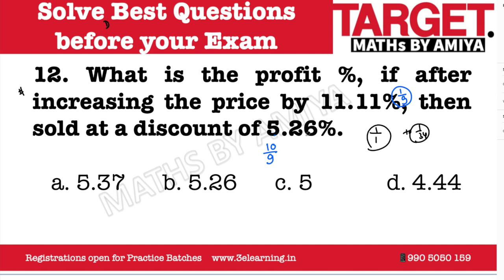5.26% is equal to 1/19. If you are going to decrease the price by 1/19, you multiply by 18/19. So we multiply the two effects together: 10/9 × 18/19, which becomes 20/19. This is the actual profit effect, which is selling price upon cost price — the product of all effects gives selling price upon cost price.